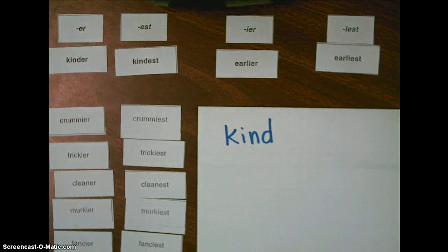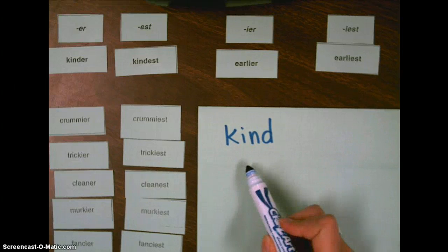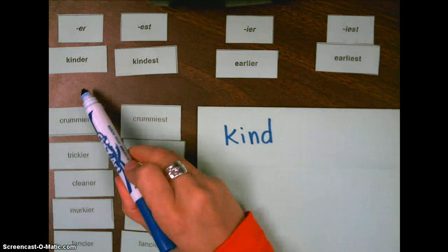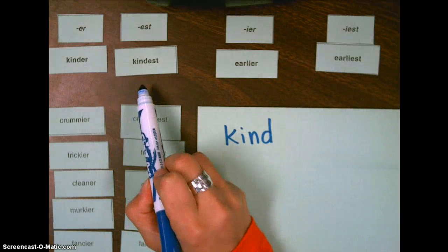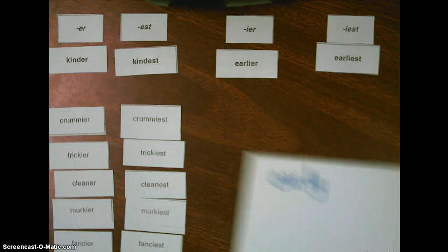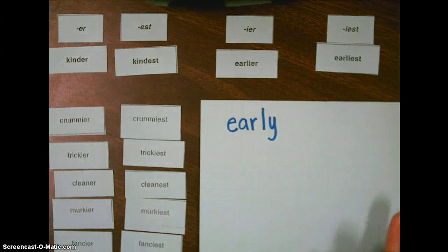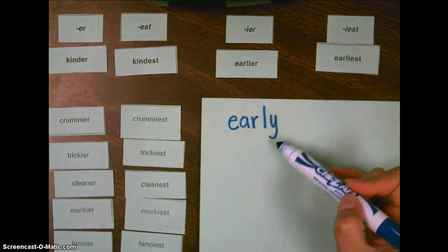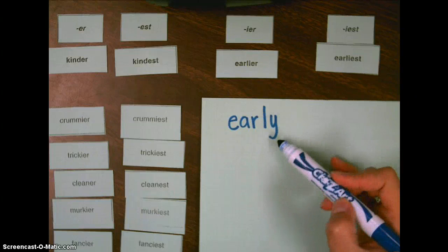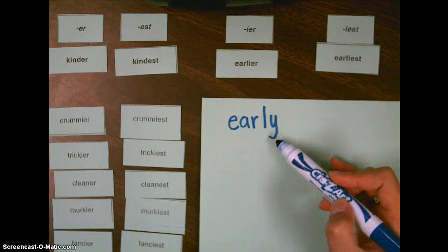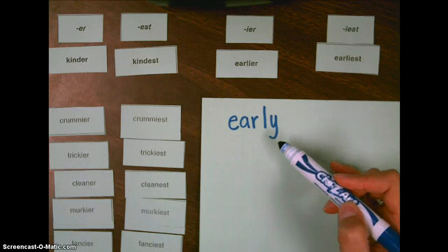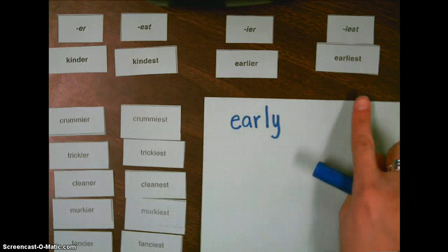So when you add words to make them comparative words, when you add suffixes to them, sometimes we just add the suffix onto the base word, for example, in the word kind, and that became kinder and kindest. Sometimes, when we add a suffix, E-R or E-S-T, if there's a Y at the end of our base word, we change that to an I before adding the suffix, for example, in earlier and earliest.